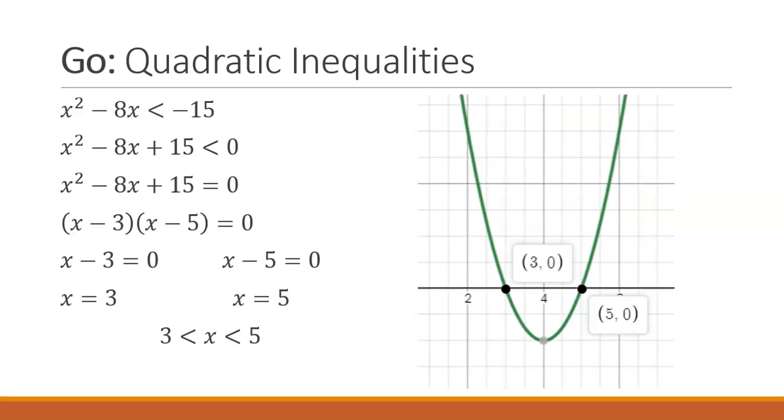Notice that we don't want to include 3 and 5 in our solutions because at these x values the function equals 0 and is not less than 0. We indicate this difference by using open circles at the end of our line segment instead of closed circles. We write the solution as x is between 3 and 5. Remember that less than or equal to and greater than or equal to include the points whereas less than or greater than do not.